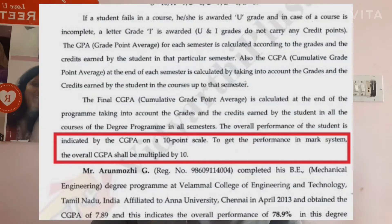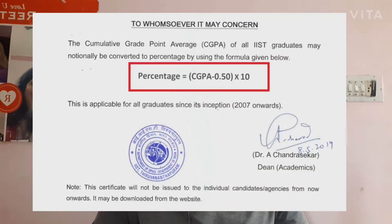Some universities convert CGPA into percentage by multiplying by 10. Suppose your CGPA is 8, just multiply by 10 and you get your percentage. Currently I am working in a university where we follow the same concept — just multiply your CGPA by 10 to get your percentage. I have also seen many universities following different criteria.